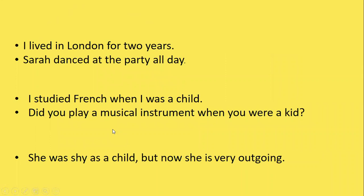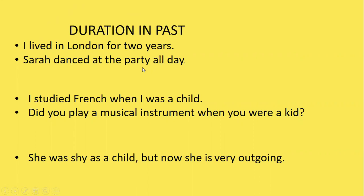The next usage is duration in the past. When you have duration in the past, you can use simple past tense. For example: 'I lived in London for two years.' 'Sarah danced at the party all day.' Simple past can be used with a duration which starts and stops in the past, often indicated by expressions such as 'for two years,' 'all day,' 'five minutes,' 'all year,' etc.